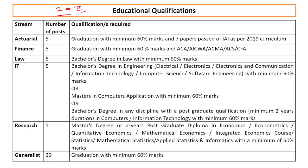There are 5 vacancies for actuarial, 5 for finance, 5 for law, 5 for IT, 5 for research and 20 for journalism. For journalism: graduation with 60% marks. For actuarial: graduation with minimum 60% marks and 7 papers passed of IAI as per 2019 curriculum. For finance: graduation with minimum 60% marks and ACA, CA, CWA, CMA, CS or CFA qualified candidates. For law: Bachelor of Law with 60% marks.